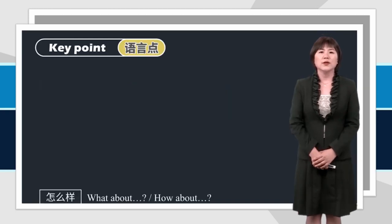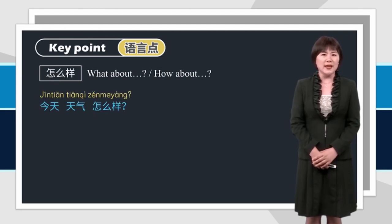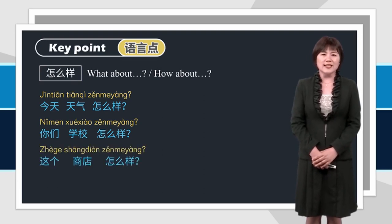When we ask about the weather, 怎么样 should be used. 怎么样 is similar to what about, how about in English. Such as, 今天天气怎么样? 你们学校怎么样? 这个商店怎么样?